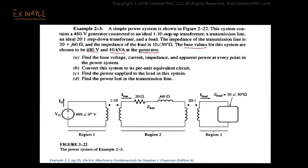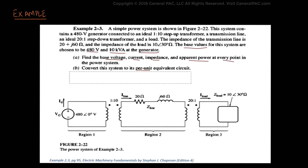We are told that the base value for the system is chosen to be 480V at 10kVA at the generator. In Part A, we are asked to find the base voltage, current, impedance, and apparent power at every point in the power system. Part B: convert the system to per unit equivalent circuits. Part C: find the power supplied to the load. Part D: find the power lost in the transmission line. We will not be solving Parts C and D since our objective is to focus on the per unit part of the problem.